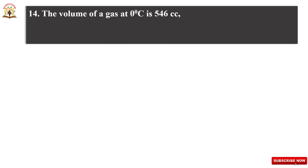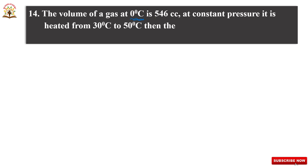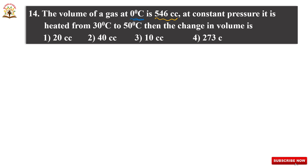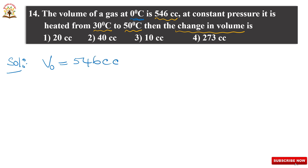Next question. The volume of a gas at 0 degree centigrade is 546 cubic centimeter at constant pressure. It is heated from 30 degree centigrade to 50 degree centigrade. Then the change in volume is to be calculated. V₀ = 546 cubic centimeter. Delta T = 50 minus 30 = 20 degree centigrade.